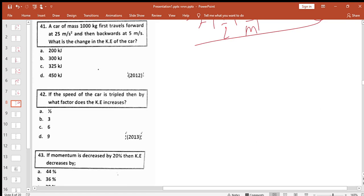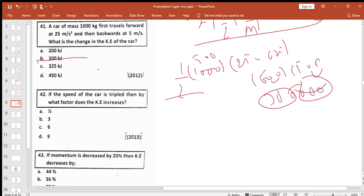We are working on energy. In the last video we did problem 40, now problem 41. A car of mass 1000 kg first travels forward at 25 meters per second, then backward at 5 meters per second. What is the change in kinetic energy? So kinetic energy, half mass v squared. We have final minus initial: half times 1000 times 5 squared minus half times 1000 times 25 squared. This gives us 500 times 25 minus 500 times 625, which equals 12,500 minus 312,500. This is negative 300,000 joules or 300 kilojoules. The correct option is C.